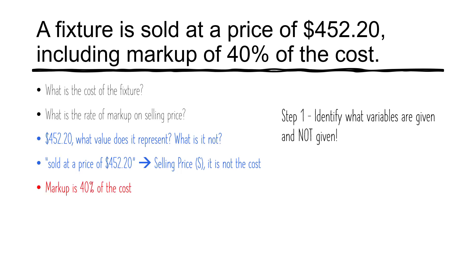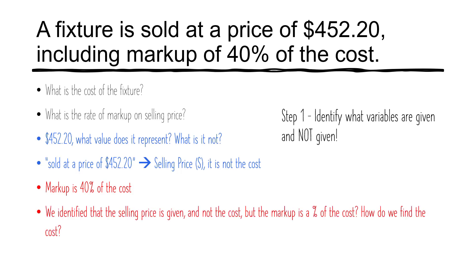What about the other number in the question — the markup is 40% of the cost. What does this value represent and what does it mean? It means the markup is based on the cost. But as we identified earlier, we have the selling price value and not the cost value. So how do we find the cost, or how do we find the markup? We need one of them to solve the question. So at least we've identified it.